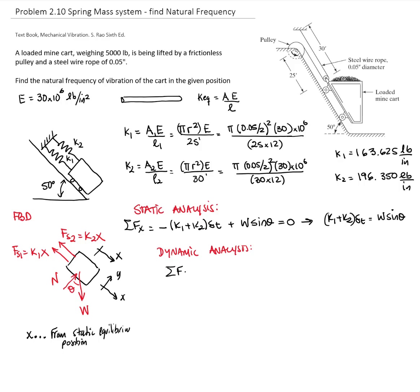If I sum forces in the x direction, I have the spring forces with static deflection plus x, plus the weight. This equals mass times acceleration. Since we did the static analysis, we can cancel out the static deflection with the weight.